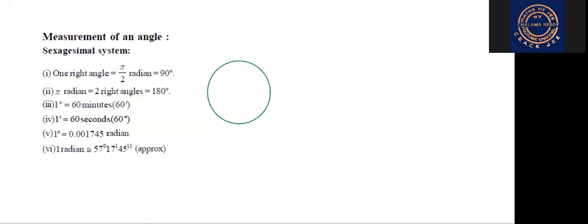Measurement of an angle. There are three types. One is Sexagesimal measurement — that is the British system. In the sexagesimal system, we denote with degree. Now total turn, that means one circle — the circle is divided into 360 parts. Each part is called a degree. It is denoted by 1°. So one full round is 360 degrees.